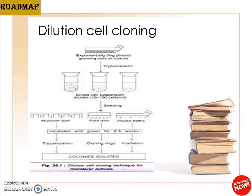If an exam question comes on dilution cell cloning, use this diagram. First give the basics of cell cloning, then mention the limitations. If it is a five-mark question, write the basic definition and draw and explain the dilution cell cloning diagram. If cell cloning and dilution cell cloning together are asked for more marks, write the cell cloning basics, the two approaches, and then explain dilution cell cloning in detail.